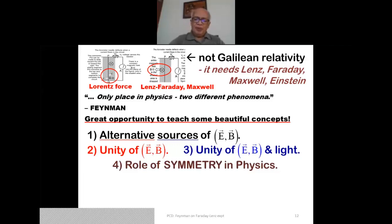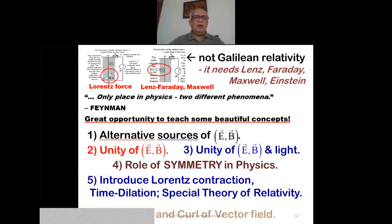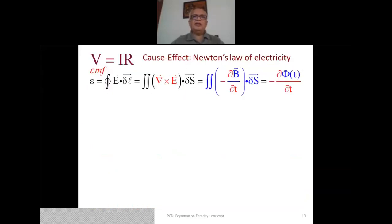We also come to terms with the unity of the electromagnetic field, which is the fundamental idea in Maxwell's equations. The third point is not only the unity of electric and magnetic field, but also optics — light becomes a member of the same family. The fourth point is the role of symmetry in physics. The fifth is a tremendous opportunity to teach Lorentz contraction, time dilation, and the special theory of relativity. The sixth is the importance of the divergence and the curl of a vector field.